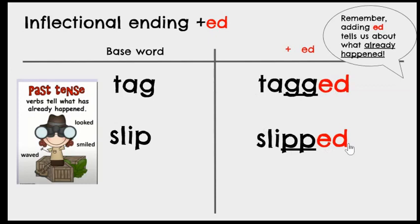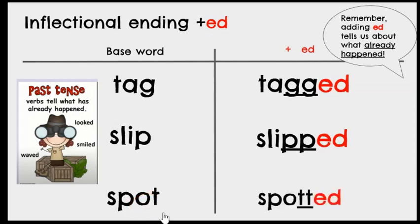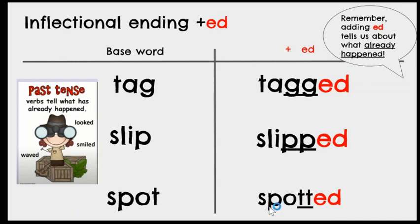Notice that -ed can sound different: tagged and slipped — sometimes it makes a 'd' sound, sometimes a 't' sound. Now here is the word spot. We add -ed but we must double the final consonant T, giving us two T's, then add -ed. When a word ends in T or D, we read it as 'spotted' — the -ed makes an 'id' sound. Let's read: tagged, slipped, spotted.